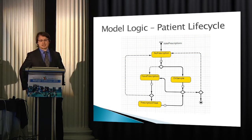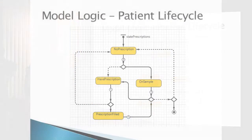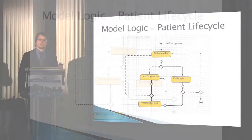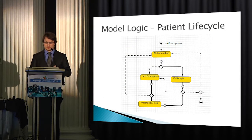This is the state chart for the patient life cycle. As you can see, patients can start without a prescription, then if they ever get a prescription, it might be either a sample or they have to go get it filled, and if they get it filled it might succeed or not, et cetera. This is the primary state chart for figuring out where the patient is in their life cycle for these drugs.